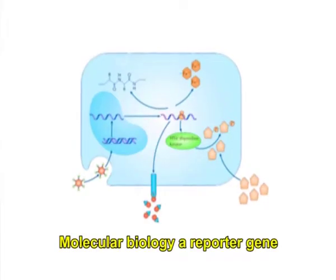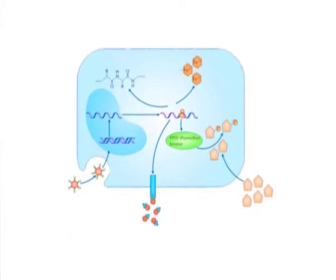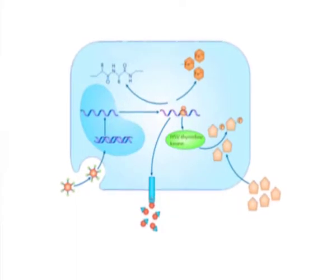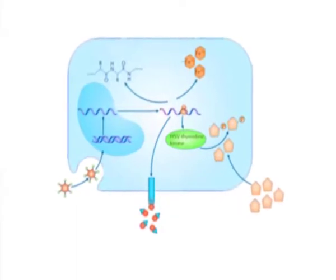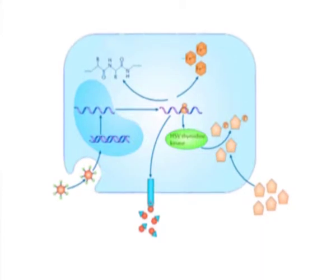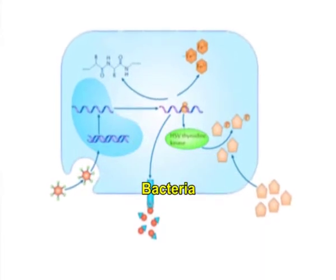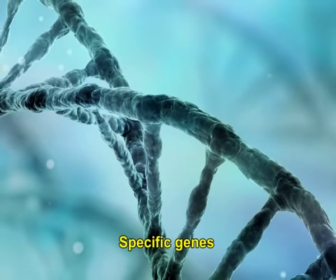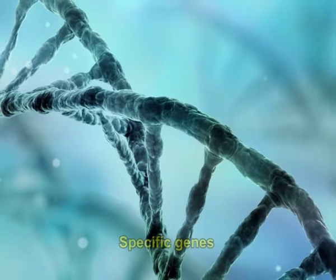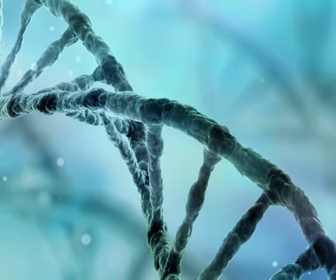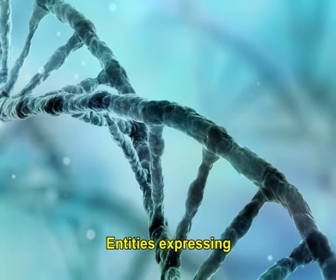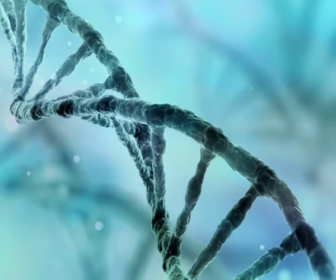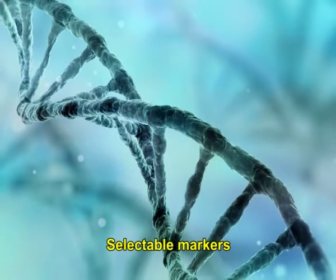In molecular biology, a reporter gene — simply referred to as a reporter — is a gene that scientists attribute to a regulatory structure of a new gene of interest in bacteria, cell culture, animals, or plants. Specific genes are selected as reporters since the individualities they report on entities expressing them are effortlessly identified and measured, or because they are selectable markers.